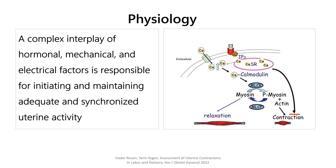A complex interplay of hormonal, mechanical, and electrical factors is responsible for initiating and maintaining adequate and synchronized uterine activity. Transmembrane calcium influx is a modulator of intracellular calcium, initiating a cascade of events including the interaction of contractile proteins, myosin and actin, regulated by myosin-light chain kinase.